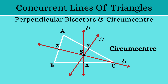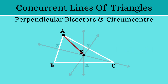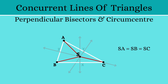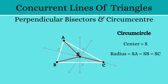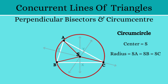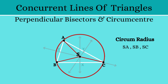This point is called the circumcenter. The circumcenter is equally distant from all the vertices A, B and C, which means SA is equal to SB is equal to SC. Using this, we can draw the circumcircle of the triangle. With S as the center and SA, SB, or SC as the radius, we draw a circle. This circle touches all the vertices A, B and C, and it is called the circumcircle of triangle ABC. SA, SB and SC are called the circumradius of the triangle.